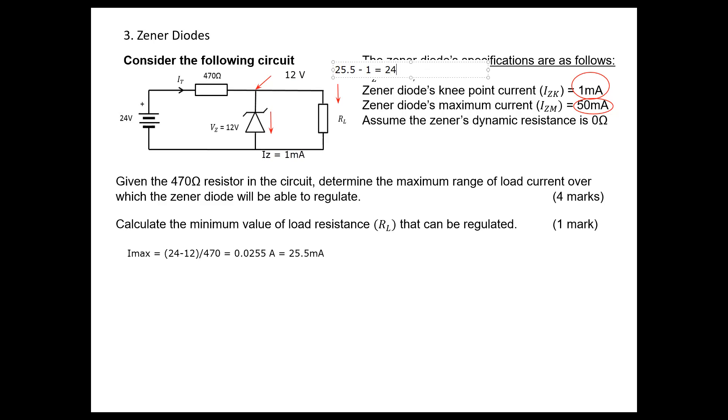This should be 25.5 minus 1, so that gives you 24.5 milliamperes current. This is the maximum possible value of load current.